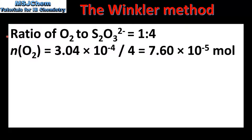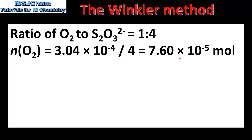Previously we saw that the ratio of oxygen to sodium thiosulfate is 1 to 4. So to calculate the amount of dissolved oxygen, we divide the amount of sodium thiosulfate used in the titration by 4, which gives us 7.60 × 10⁻⁵ moles.